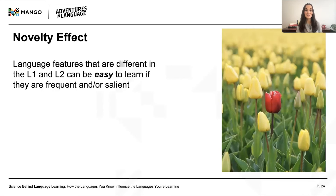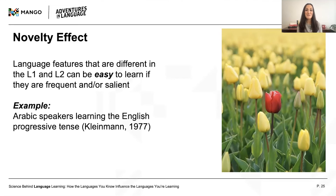Here's something to look out for: language differences don't necessarily imply difficulty. In fact, if a language feature is very different between the L1 and L2, it might actually stand out to learners and be relatively easy to learn. This is especially true for a feature that's used very often or very rarely. For example, Arabic doesn't have a progressive tense like 'I'm going' or 'she's writing,' but this is a very frequent and salient construction in English that Arabic speakers actually master quite early. In this way, there can be a novelty effect which facilitates learning language differences.